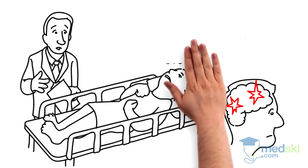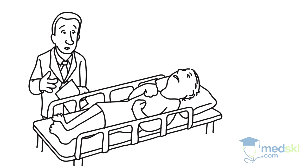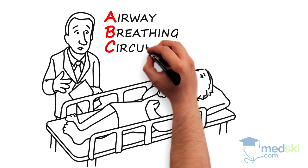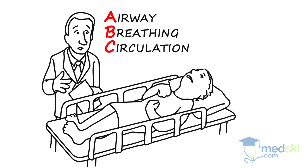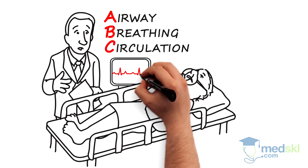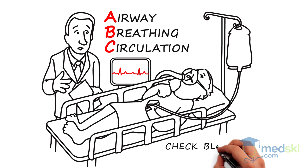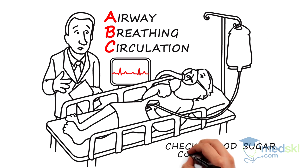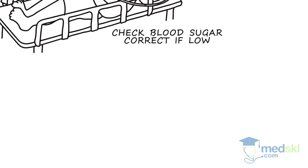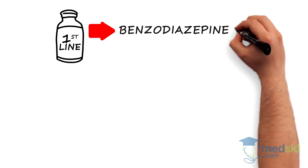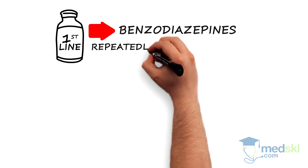As in all emergencies, the ABCs — airway, breathing, and circulation — take priority. Place the patient on 100% oxygen, attach them to the monitors, and establish intravenous access. Check a blood sugar and correct it if it's low. The first-line medications to stop the seizures are benzodiazepines, and they can be given repeatedly every five minutes until the seizure stops.